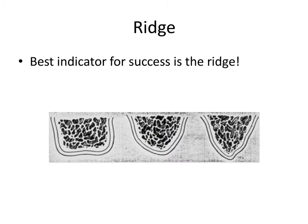One important concept for the board exam: the best indicator for success of a denture is the ridge, because it can provide all three things — support, stability, and retention. A wide, broad ridge is the best. From left to right in this image, this is the best to worst situation: the square ridge on the left is the best case scenario, and the triangular ridge on the right is the worst case scenario. The best indicator for denture success is the ridge.